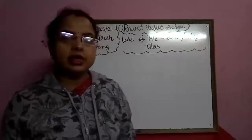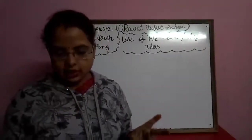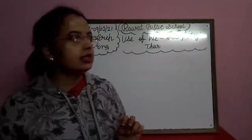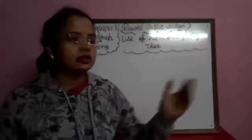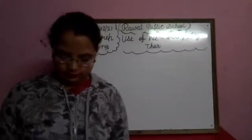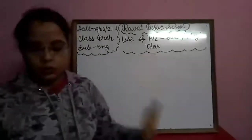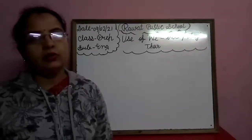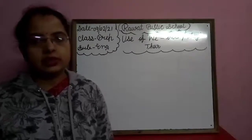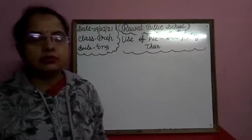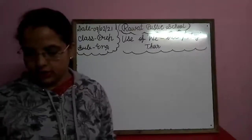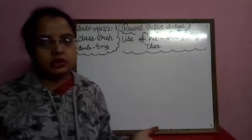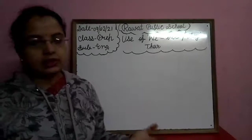Hum They ka use kiske liye karte hain? Jab do things hoti hain, jab do peoples hote hain, unke liye hum They ka use karte hain. Like this — They are students. They are girls. They are boys. Now, Their — Their is used to indicate that something belongs or relates to a group of people. Their ka matlab unka. Those are their books — woh unki books hain. Those are their pants — woh unke pants hain.